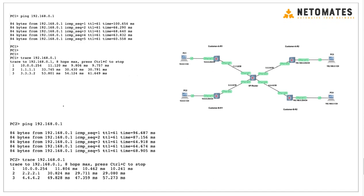Let's do a connectivity test. PC1 is in the Customer A VRF and we are pinging 192.168.0.1. Running a trace, the packet went to the gateway, then to 1.1.1 — arriving at Ethernet 1 on the service provider router. Since Ethernet 1 is in Customer VRF A, the router checks VRF A's routing table. Based on the static route we added, the packet is forwarded to 3.3.2, and then continues to the destination.